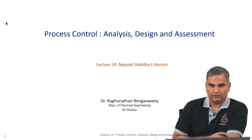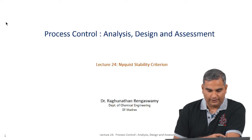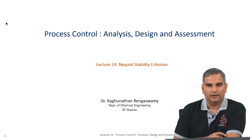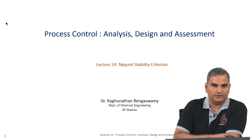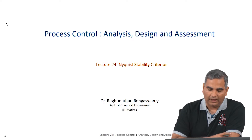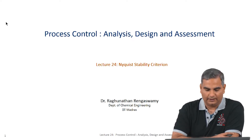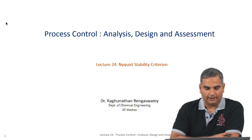We will continue with our 24th lecture in this course on process control analysis, design, and assessment. In the last few lectures we have been talking about control of time delay systems — what time delay means, why it is relevant in practical situations, and the difficulties that come because the time delay term takes the transfer function away from the ratio of polynomials form. We discussed how to control such systems by actively using the model in the controller implementation.